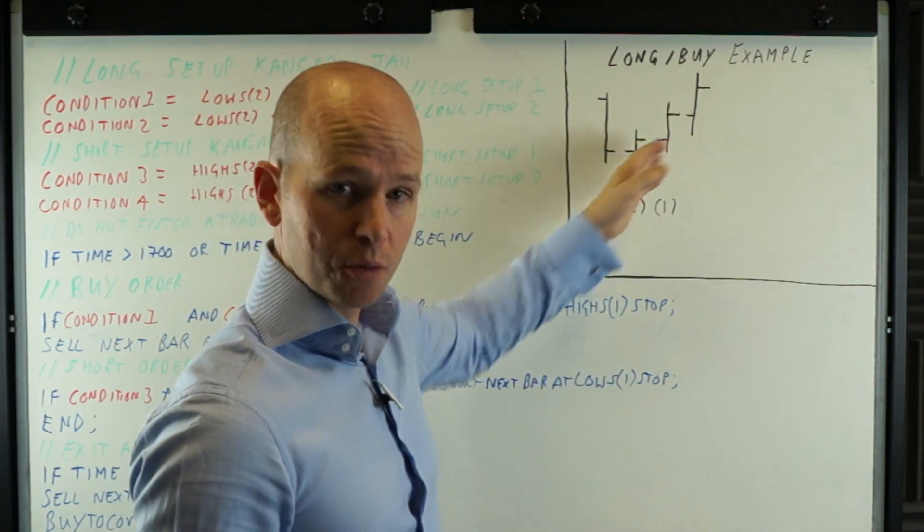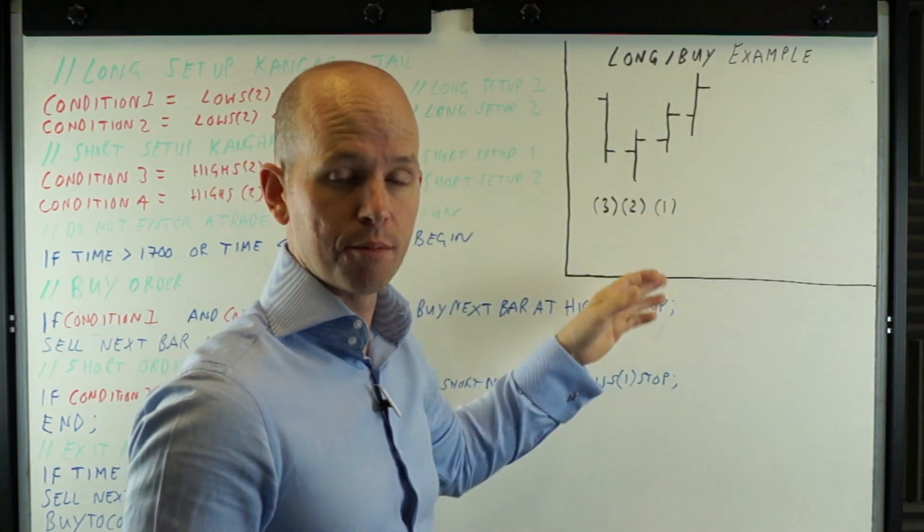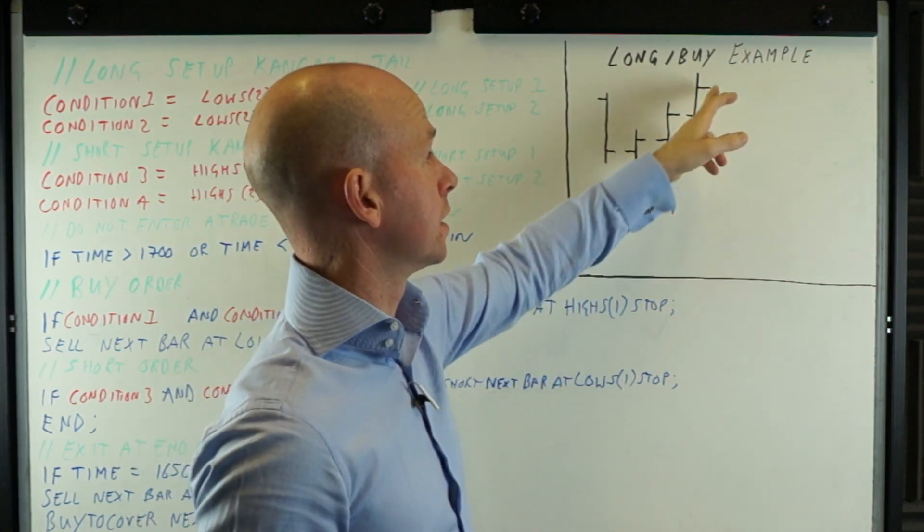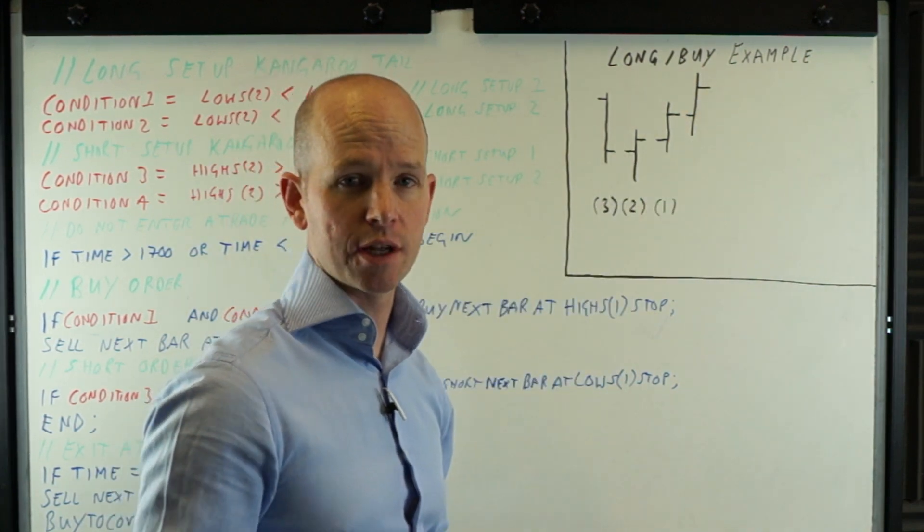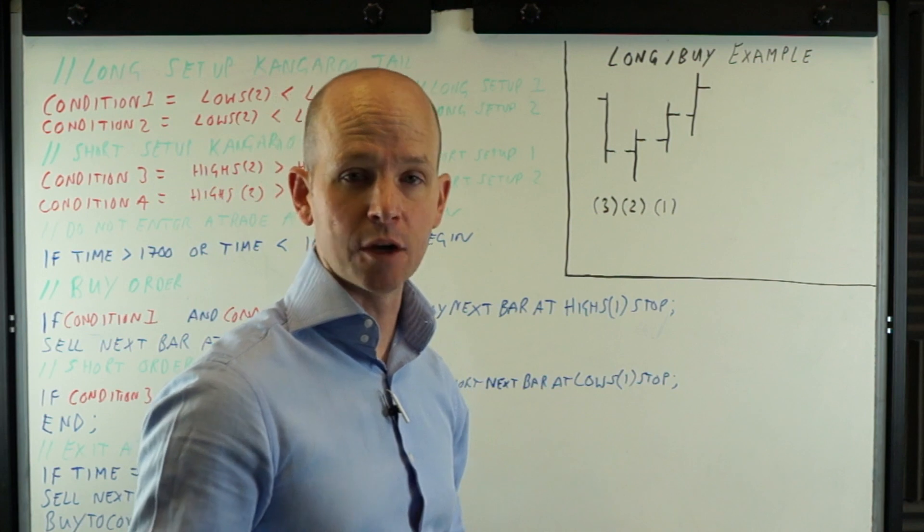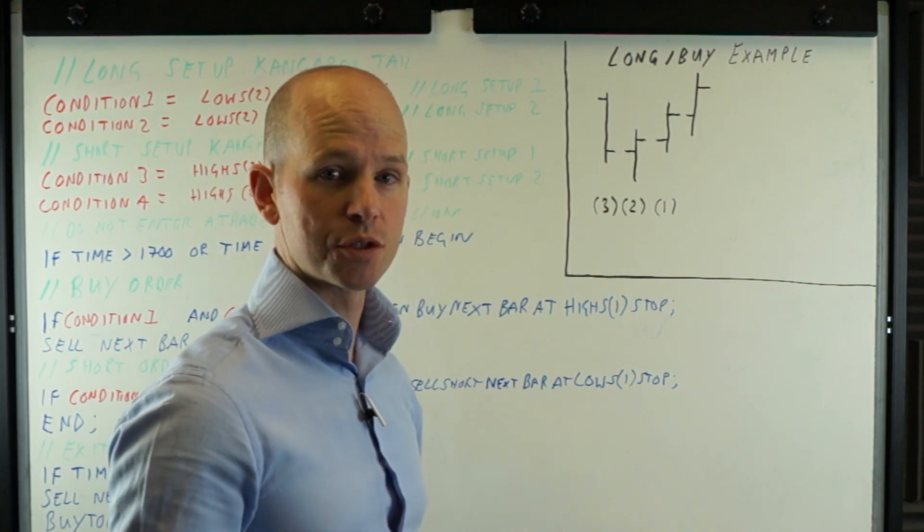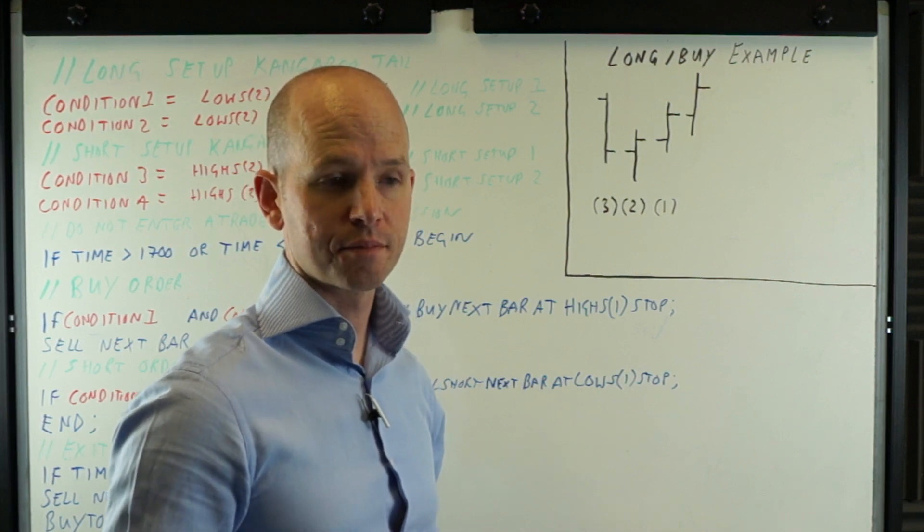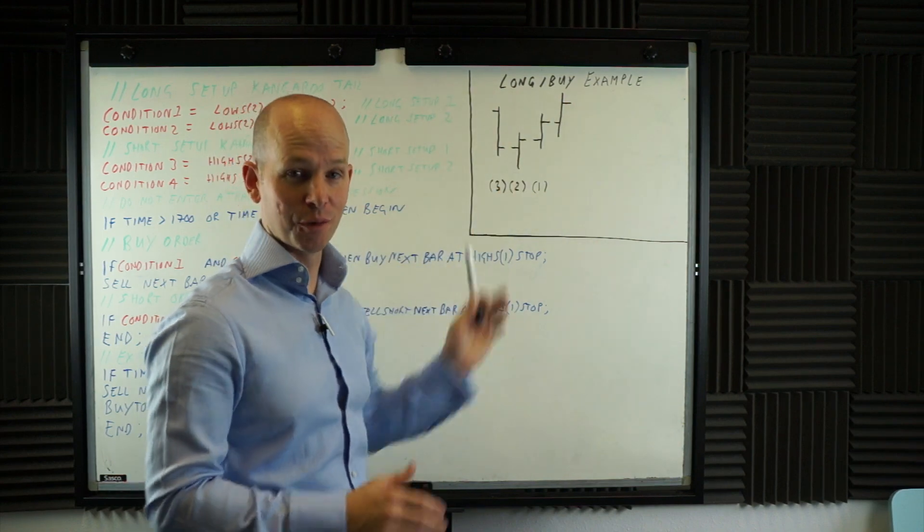Stop loss is at the low of that bar and this will become clearer when I walk through the code. Once we're in the trade, if we get stopped into the trade the following day on this bar, the exit is a simple time-based exit. We're either going to get stopped out or we're going to exit at the end of the session. So right near where the session ends, we're dealing with Forex, it's going to be around about 1700 Eastern Standard Time. Then we just exit the strategy with a market order. So that's the basic strategy that we're looking to programme.